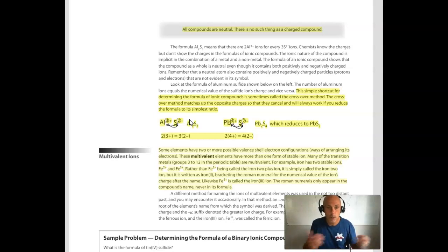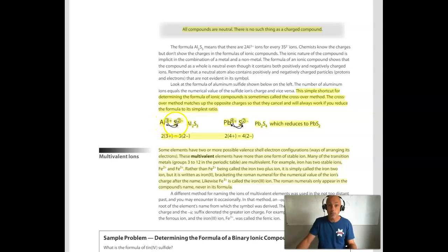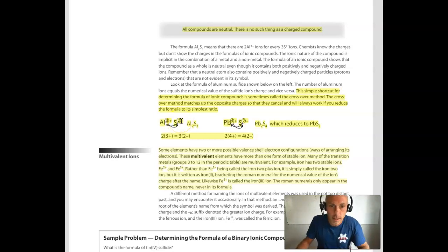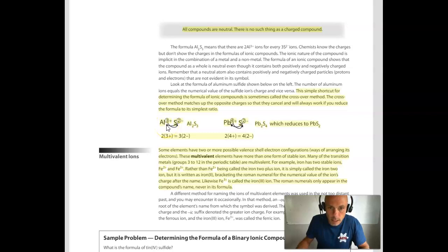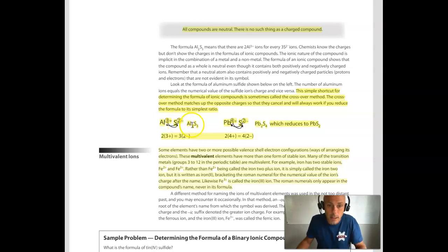The easiest way to do it is what's called the crisscross method. You take the charge number for the anion — in this case 2− — and make it the subscript for the cation. Meanwhile, you take the charge number of the cation — the 3 from aluminum — and that becomes the anion subscript. So the charge number for sulfide was 2−, that's aluminum's subscript, and the charge number for aluminum was 3+, that becomes sulfide's subscript.